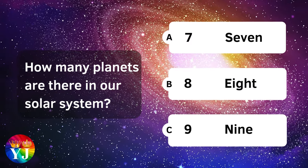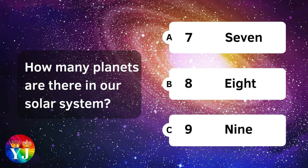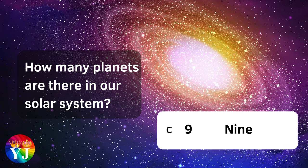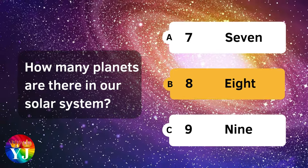How many planets are there in our solar system? Eight.